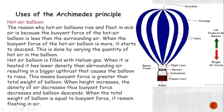Now for applications of Archimedes' principle: a hot air balloon floats in air because it is filled with helium gas, which is lighter than air. When heated, the gas has lower density than the surrounding air, resulting in a larger upthrust that causes the balloon to rise. This means the buoyant force is greater than the total weight of the balloon. As height increases, the density of air decreases, so the buoyant force decreases. The balloon descends and remains floating when the total weight of the balloon equals the buoyant force.